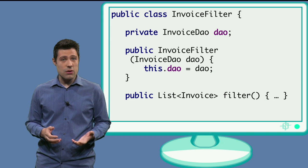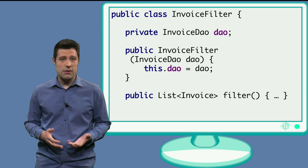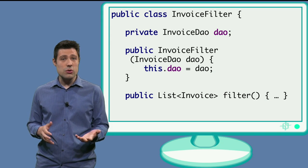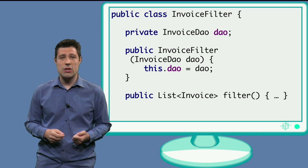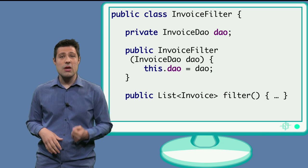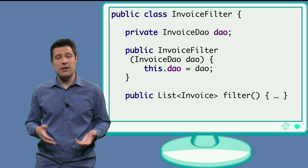And this is nice because due to the polymorphism of the Java language, we can pass any class that is or inherits from invoice data access object in this constructor.